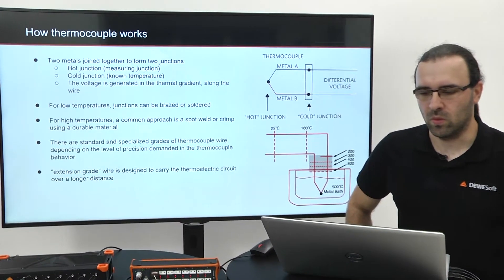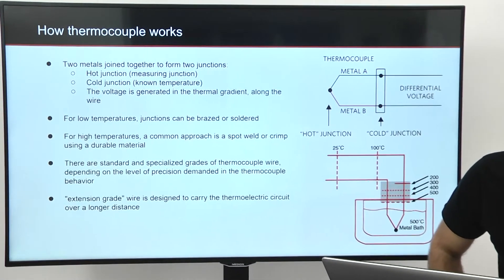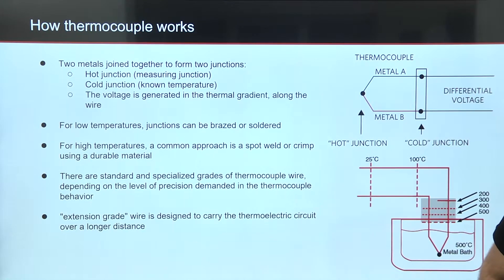When you join two wires with different metals on one end, you get a hot junction measuring junction on one side and a cold junction on the open side. Junctions can be brazed or soldered for low temperature, or spot welded for high temperature measurements. Voltage is then generated in the thermal gradient along the wire.